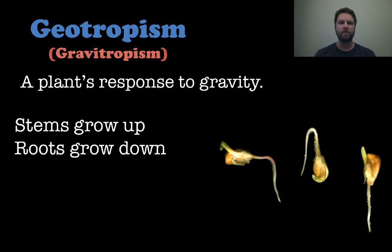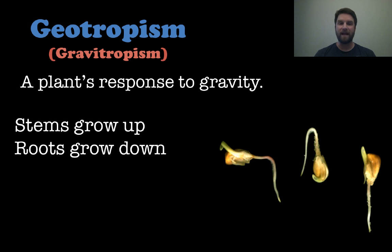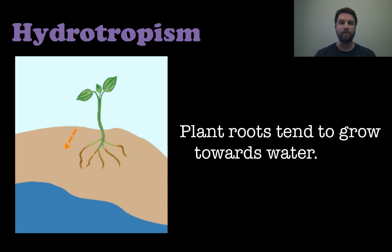The next one, gravitropism — sometimes called geotropism — is a plant's response to gravity. This one is quite simple. Looking at the seedlings, stems grow up against gravity and roots go down with gravity. So stems up and roots down — that is the plant's response to gravity.